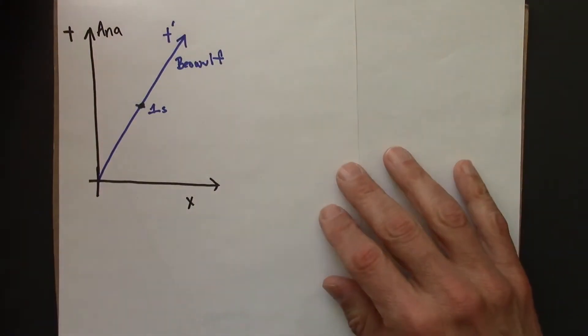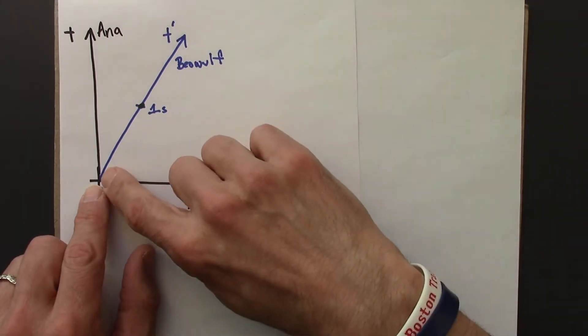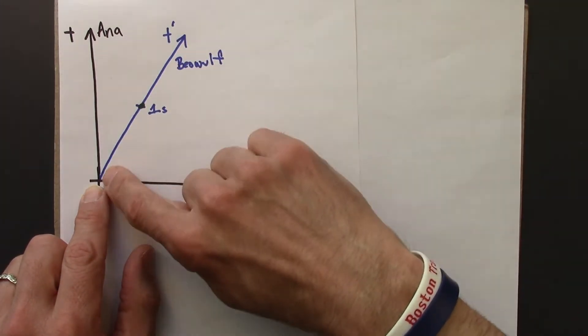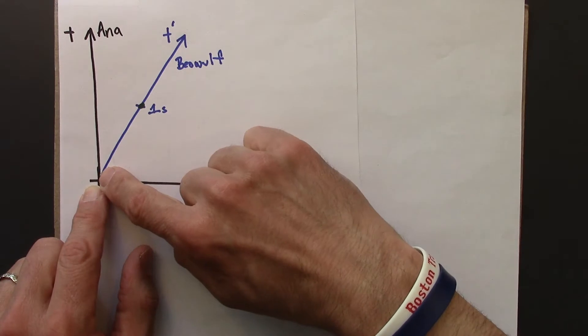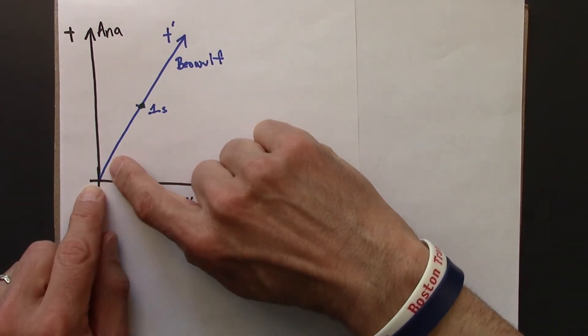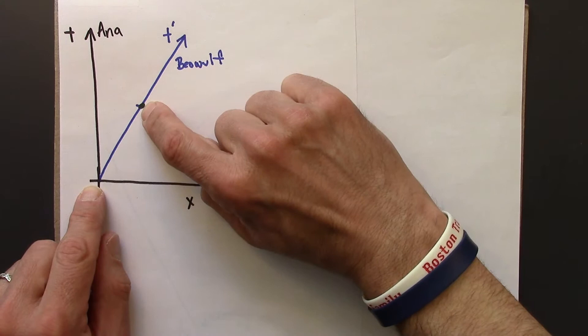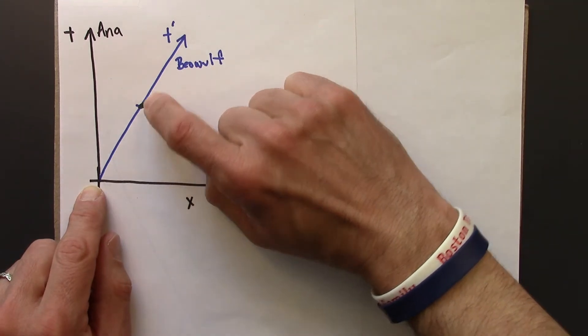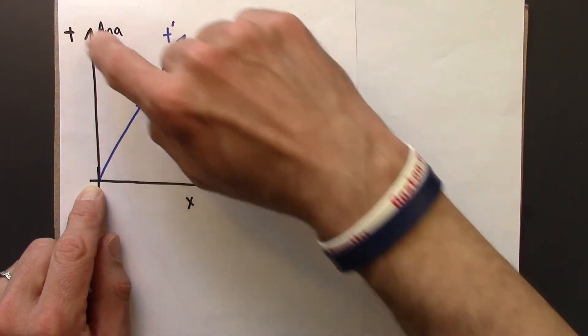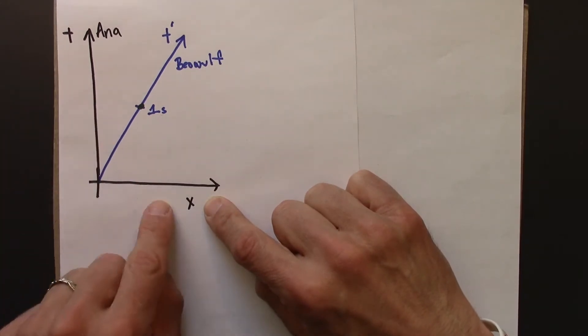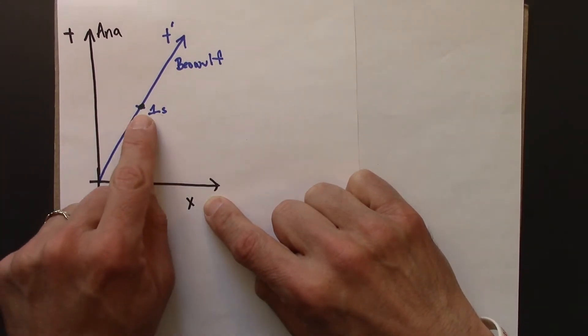So here's a picture for that. We've got Beowulf's clock. This is a world line for his clock. And Beowulf reads zero here, and then a little while later reads one second here. And we'd like to know in the at rest frame, in Anna's frame,